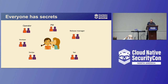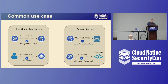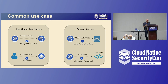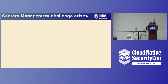No matter who you are in the organization, we all need secrets — whether you're an operator, developer, DevOps, or a PM. We all need to access specific environment information to look something up, deploy an application, or manage infrastructure. We can separate the secret use case into two common cases: identity authentication — for service-to-service or microservice, the secret is an API key or database credential; for human-to-service, it's a password or SSH key. The second case is data protection — encryption in transit or at rest, where the secret is an encryption key or certificate.